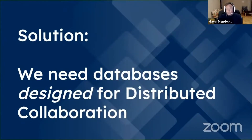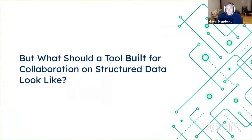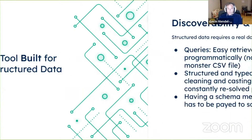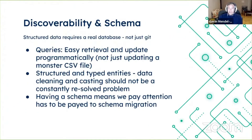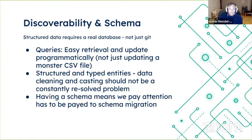The solution we really want for data is a database designed for distributed collaboration. What should a tool built for collaboration on structured data look like? Going back to the database — I'm a big fan of MySQL and Postgres, databases I've used a lot. There are really big advantages to using them over a CSV: discoverability and schema are really important aspects. You want to be able to do queries, to retrieve and update programmatically — not just updating a monster CSV file, but doing a proper query, getting all matching results, and editing them. Structured and typed entities are really critical.